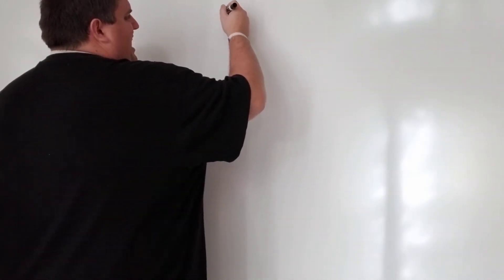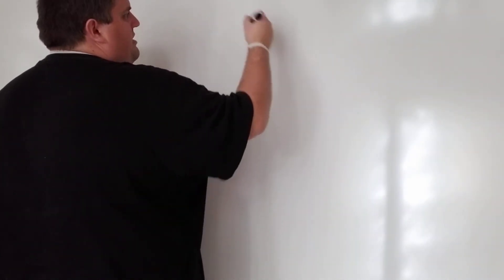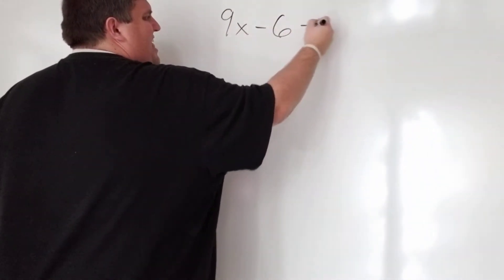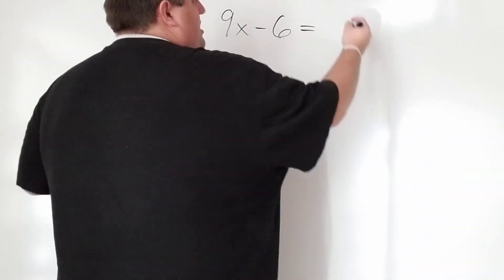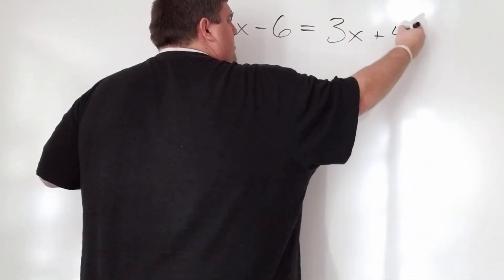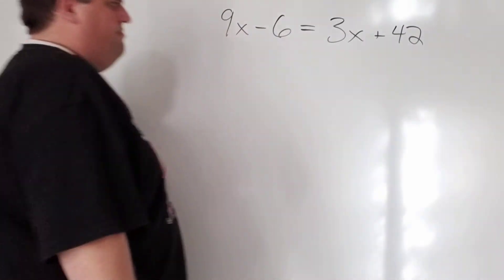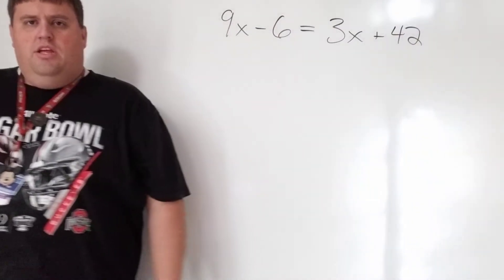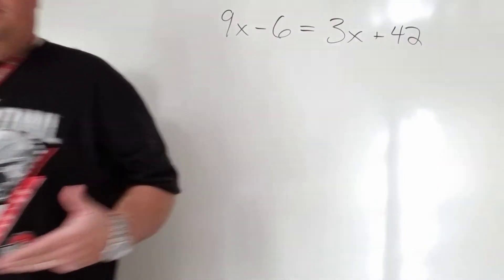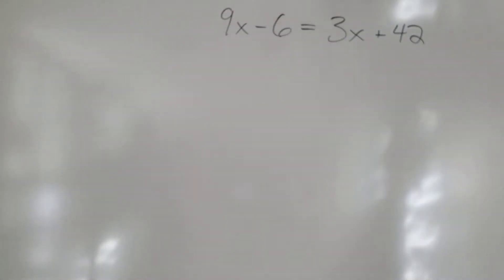So maybe you have something like, let's go super basic. 9x minus 6 equals 3x plus 42. All right. So notice that we have those variables and they're on both sides. We have a 9x and we have a 3x. So is that going to change some stuff for us?